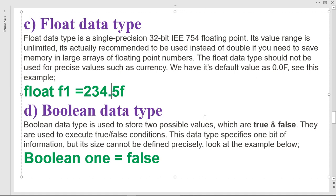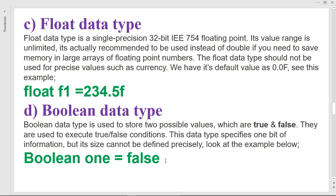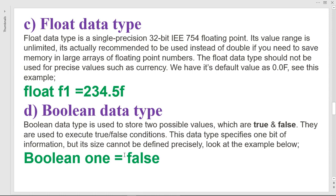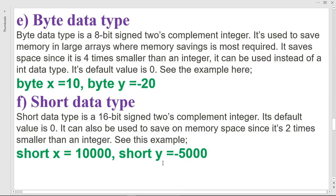Boolean is used to store two possible values: true or false, as we have discussed. It is used to represent true or false conditions. This type is 1 bit in size, though this size cannot be defined precisely. The default value is false. When you call your boolean value it can either print false or true.